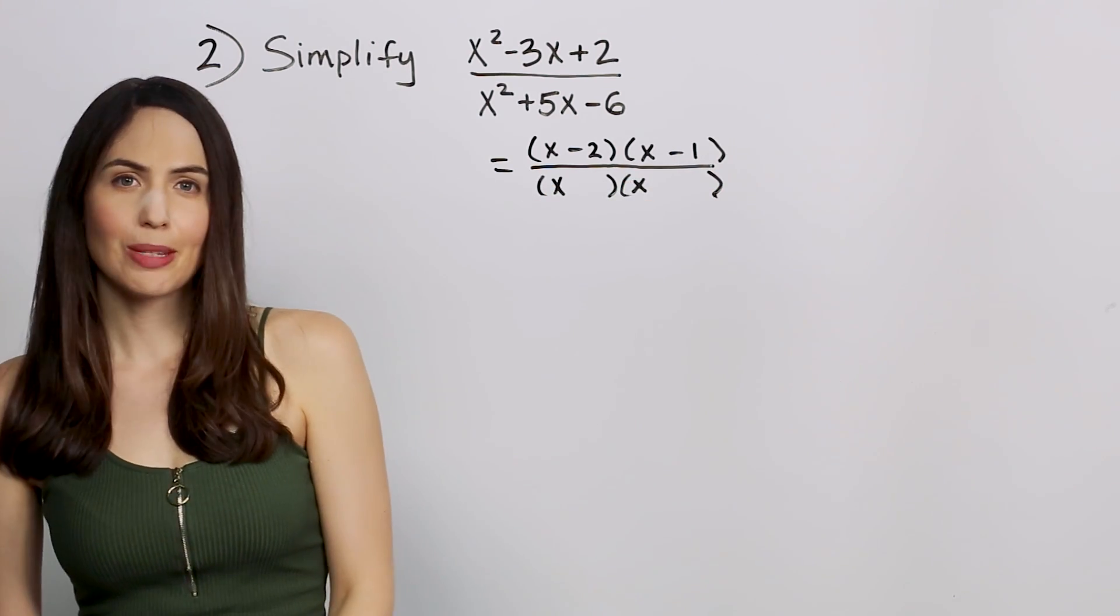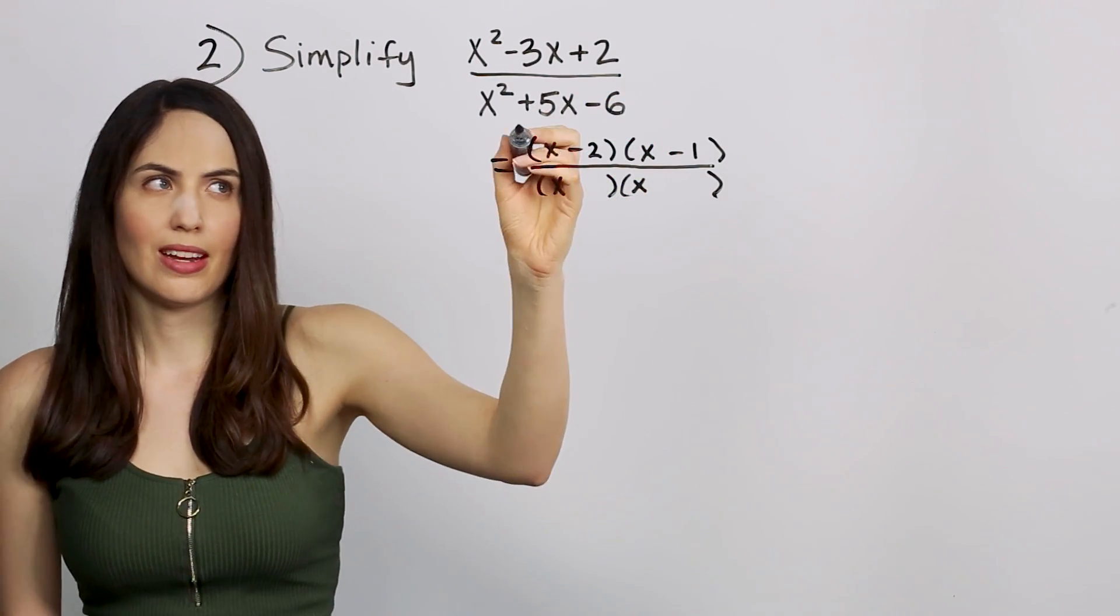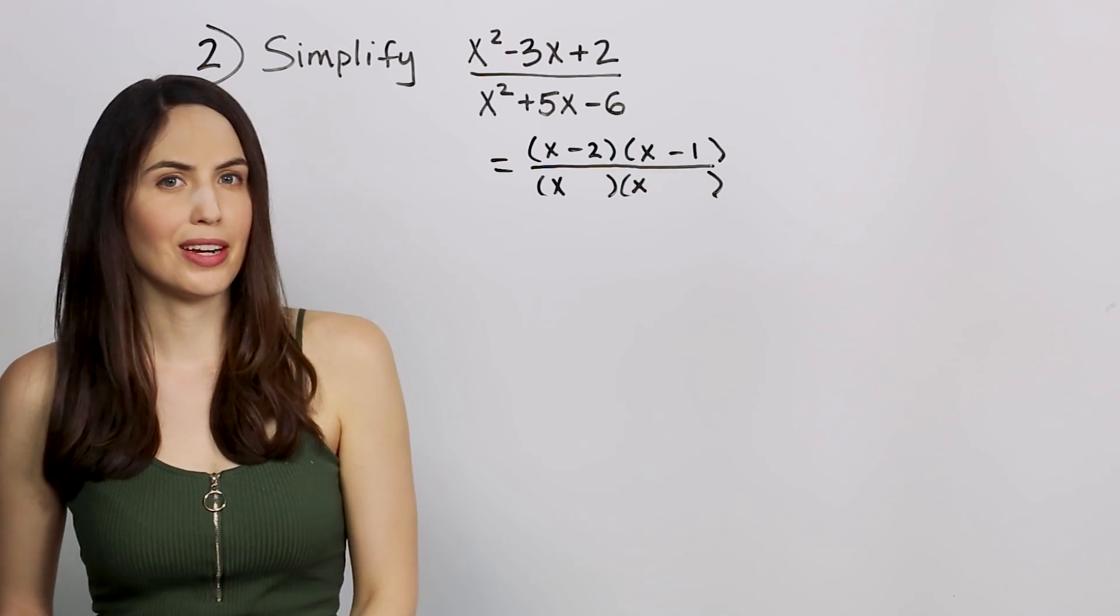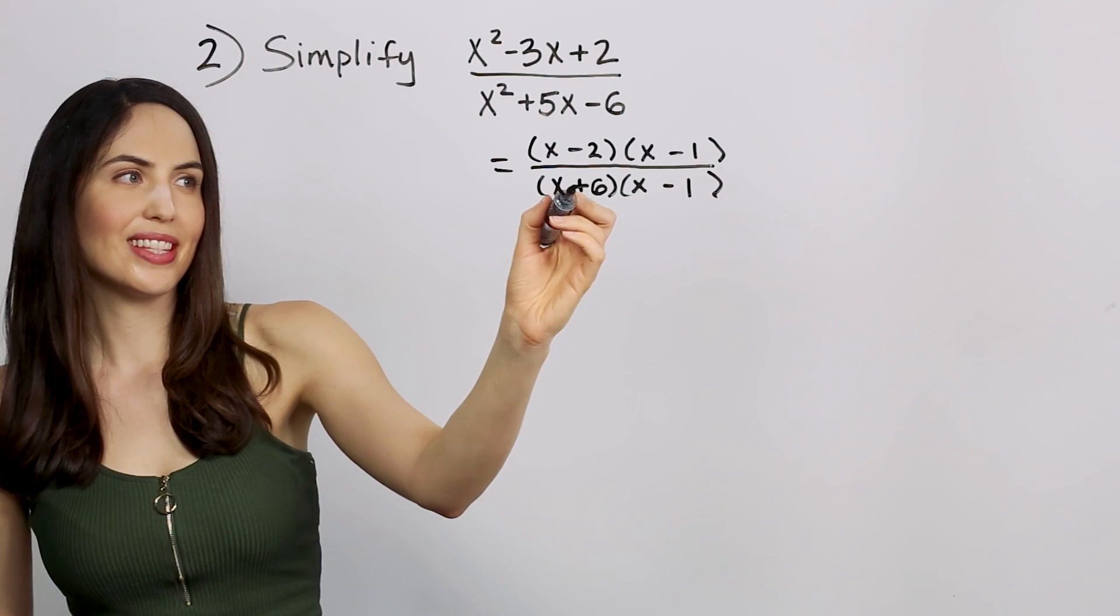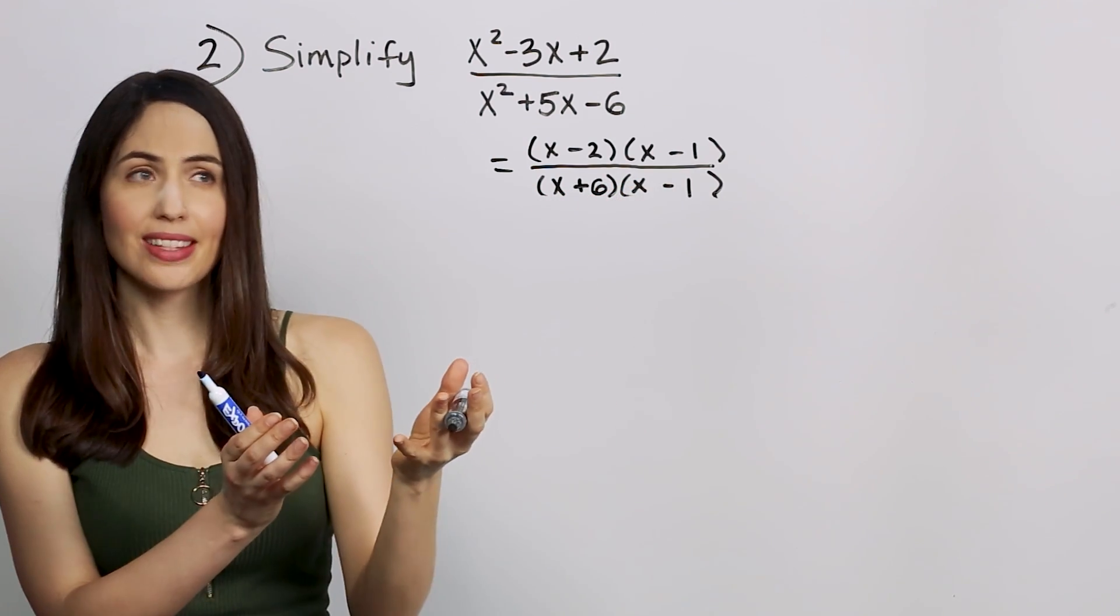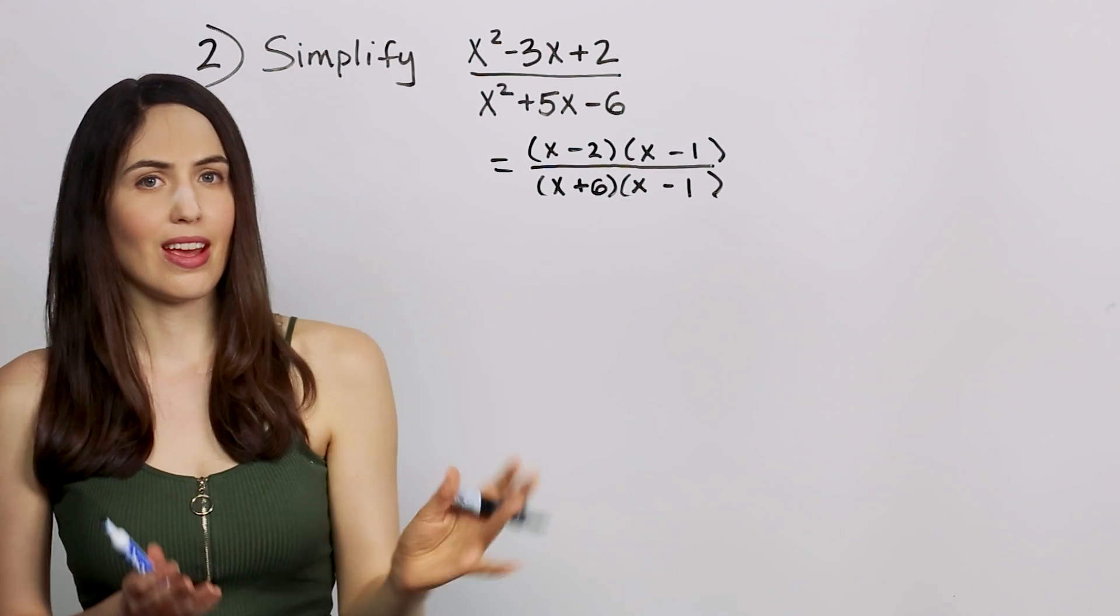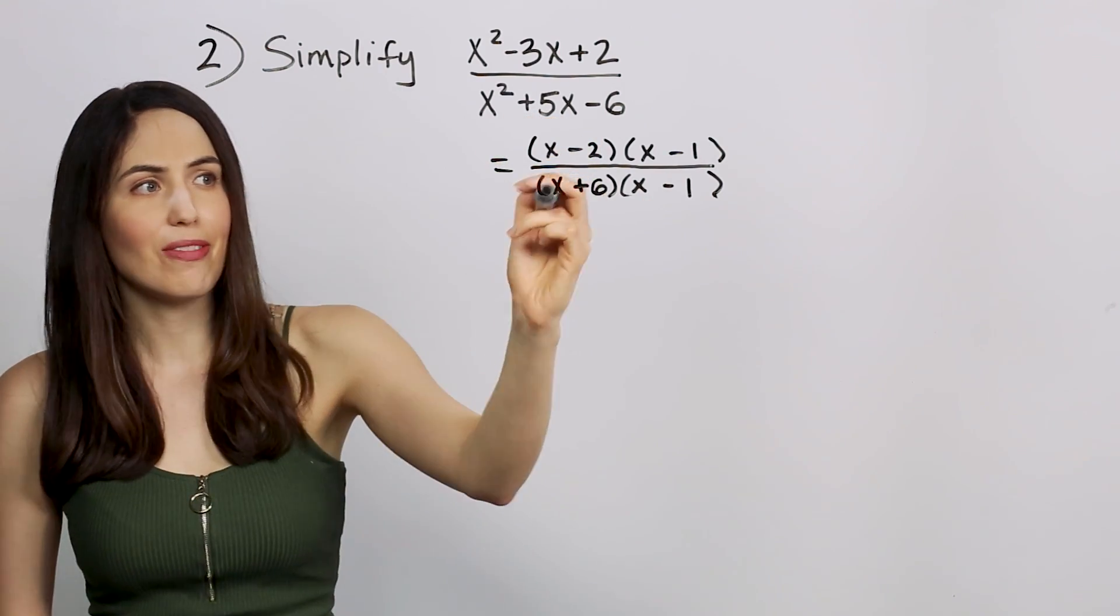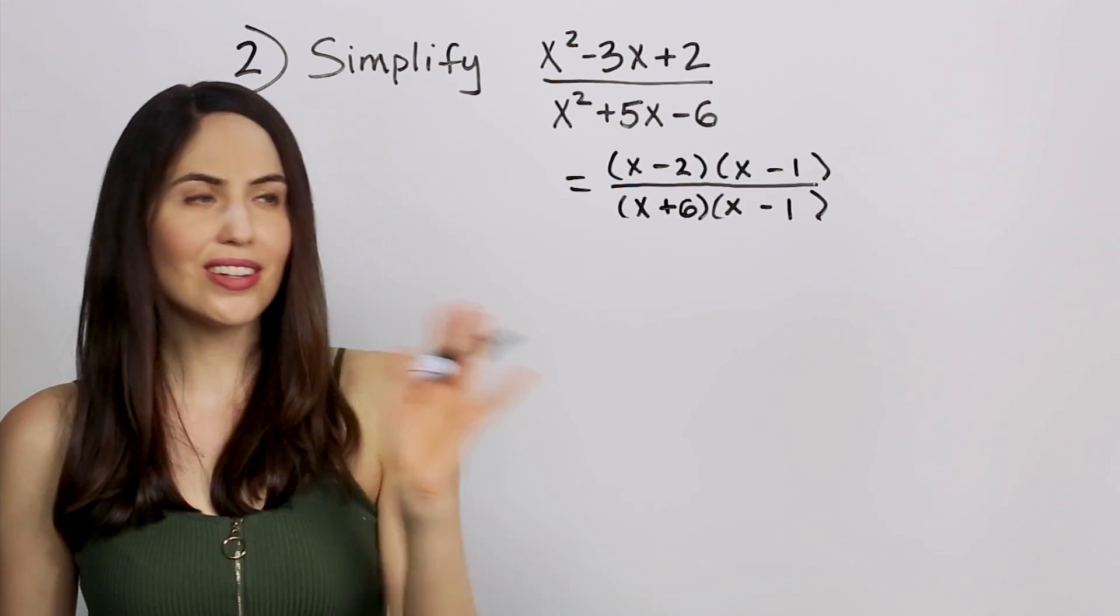Okay, so same idea as before. We want two numbers that multiply to give you negative 6 and add to give you positive 5. Let's try positive 6 and negative 1. Positive 6 and negative 1 multiplies to give us negative 6, which is what we wanted. Positive 6 and negative 1 adds to give us positive 5, also what we wanted. So this is the factoring of that expression, the factorization of it. So we're all done with the factoring.